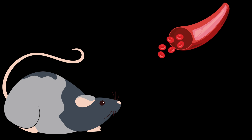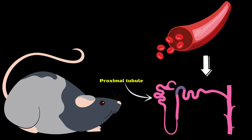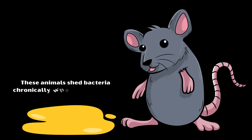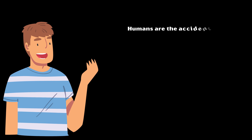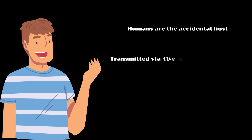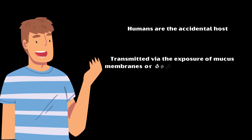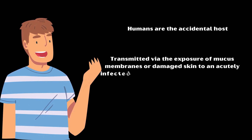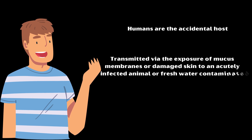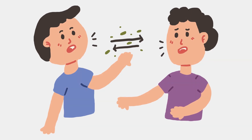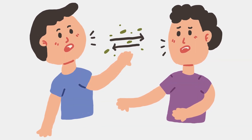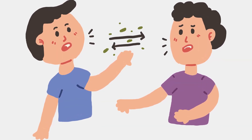In animals, bacteria spread hematogenously and colonize the proximal renal tubules. These animals shed bacteria chronically when they pass urine. Humans are the accidental host, and the disease is transmitted via the exposure of mucous membranes or damaged skin to an acutely infected animal or fresh water contaminated with the urine of a chronic carrier, particularly a rodent. Additionally, the organisms can also enter the body through inhalation of aerosolized body fluids.